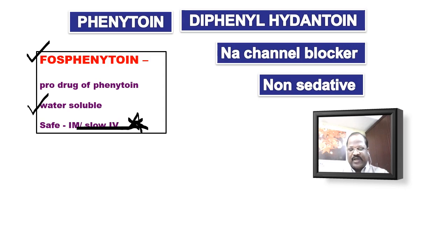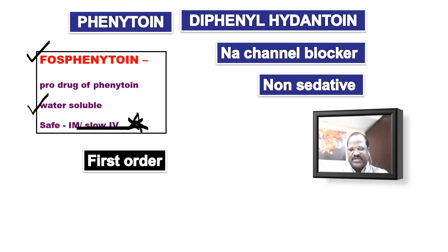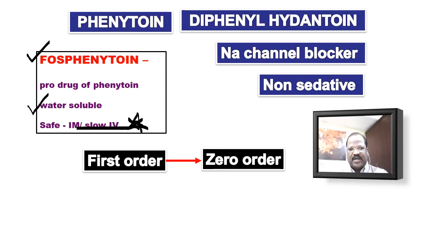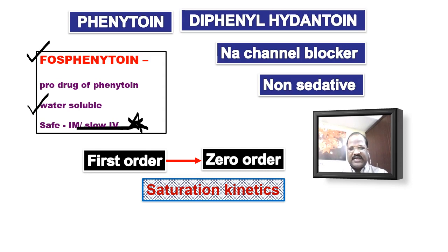Next important MCQ question: phenytoin initially undergoes first-order kinetics of excretion. As we keep on giving it, the first-order kinetics gets saturated. Once saturated, the drug ultimately goes through zero-order kinetics of excretion. That means it initially undergoes first-order, and at the end undergoes zero-order kinetics of excretion. This is why it is called saturation kinetics of excretion. At the undergraduate level, you can say phenytoin ultimately undergoes zero-order kinetics, but exactly speaking, it undergoes saturation kinetics of excretion.